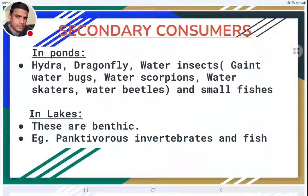Secondary consumers in ponds include Hydra, dragonflies, water insects such as giant water bugs, water scorpions, water skaters, water beetles, and small fishes that feed on primary consumers. In lakes, secondary consumers are benthos animals present in the benthic zone — including planktivorous invertebrates and fish. So, benthos animals are primary consumers in ponds but secondary consumers in lakes.